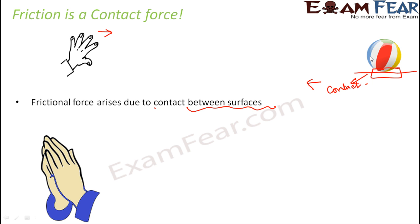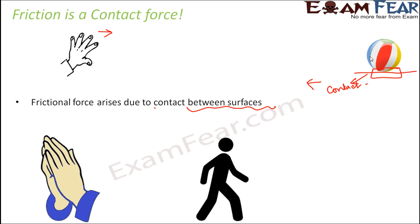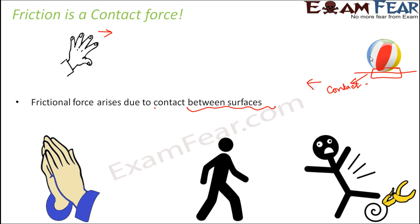If you rub your hands together, it is due to friction that heat gets generated. In this case also, both your palms are in contact with each other. While you are walking on the ground, you are able to walk because of the force of friction. If friction is not there, you will not be able to walk — you will slip over the ground. For example, when you step over a banana peel, you tend to slip because it is very slippery. The frictional force is very less between your feet and the banana peel, and therefore you tend to fall. We are able to walk and run because of the presence of frictional force. Frictional force exists due to contact between surfaces, and therefore it is a contact force.